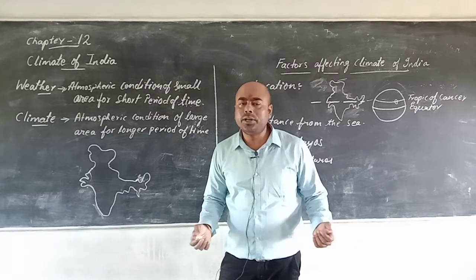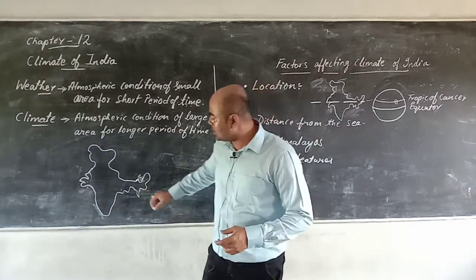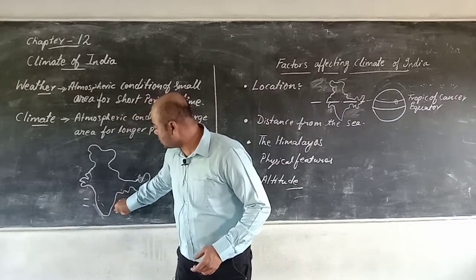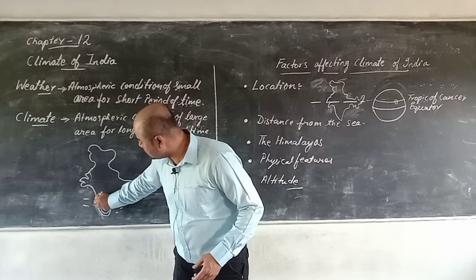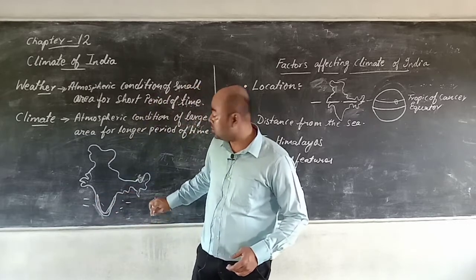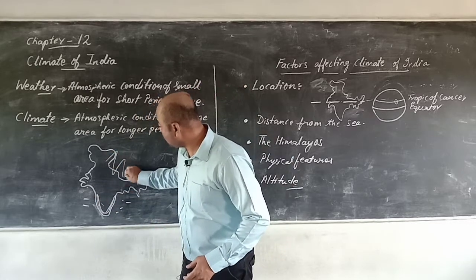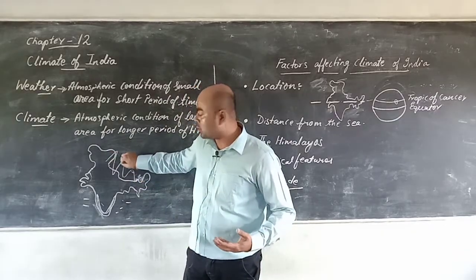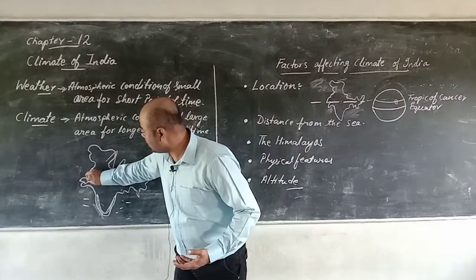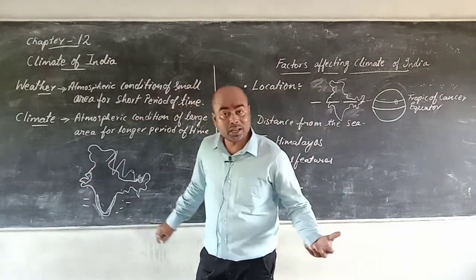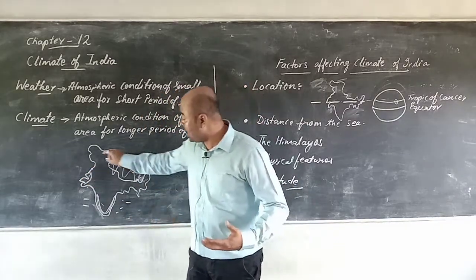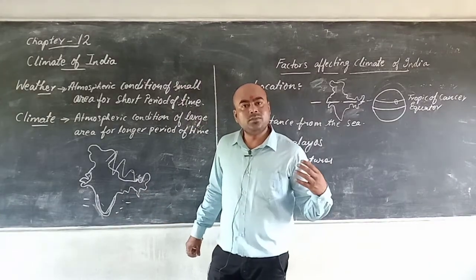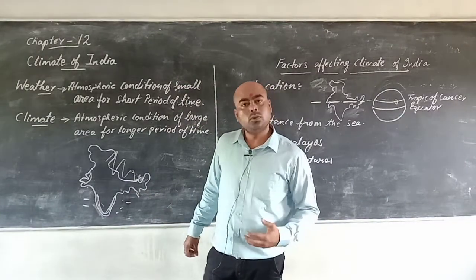Now, India is a very large country, so different parts of India will have different types of weather according to location. Coastal areas near the sea will have the sea's effect. Areas near the Himalayan mountain ranges will have a hilly, cold type of climate. In Rajasthan there is a desert, so they will have a desert type of climate. Because India is a large country, weather differs from place to place.